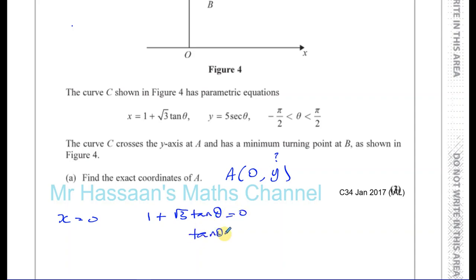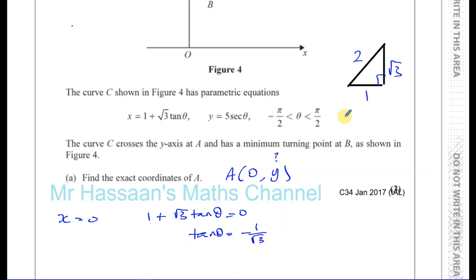So tan theta is equal to minus 1 divided by root 3. To find theta, I'll use the exact ratio triangle — half an equilateral triangle with sides 2, 1, and root 3. Tan of the angle is 1 over root 3, so that angle is 30 degrees, which is pi over 6. And since tan theta is negative, theta is going to be minus pi over 6.